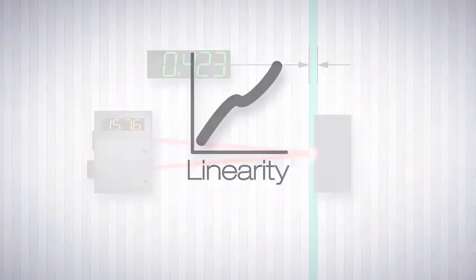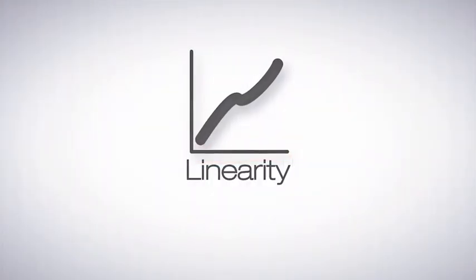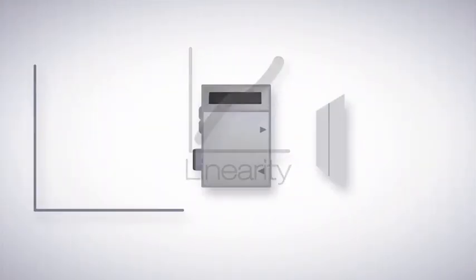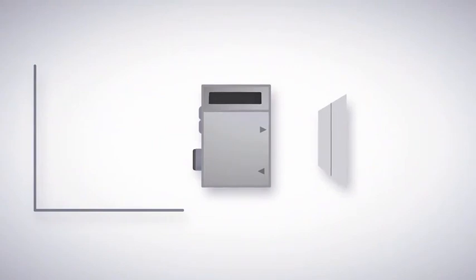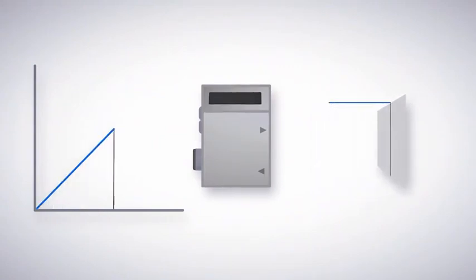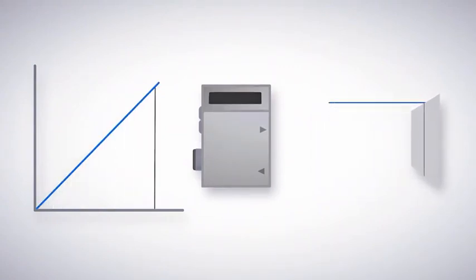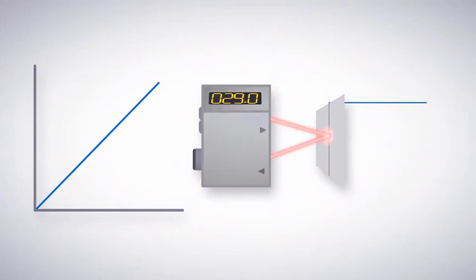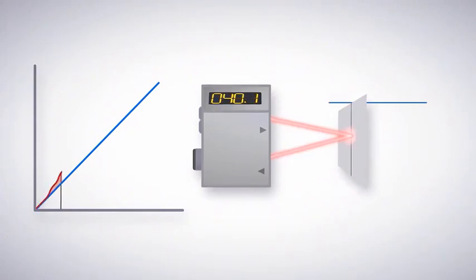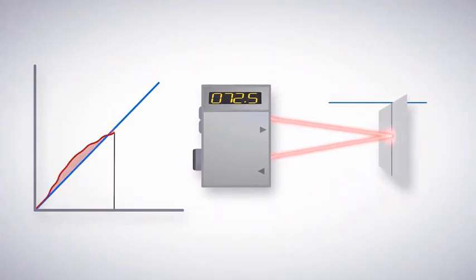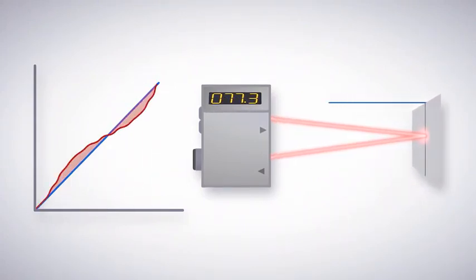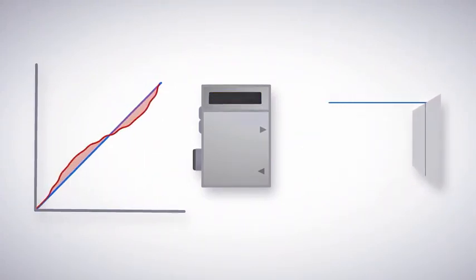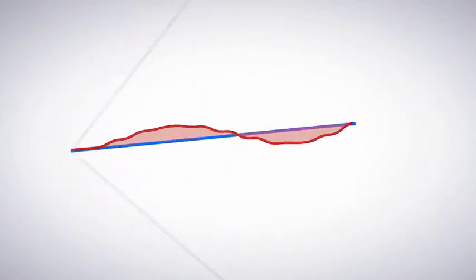Linearity is the maximum deviation between an ideal straight-line measurement and the actual measurement. It indicates how closely a sensor's analog output can approximate a straight line when measuring across the sensor's range. The more consistent the measurements are, the more linear the sensor.